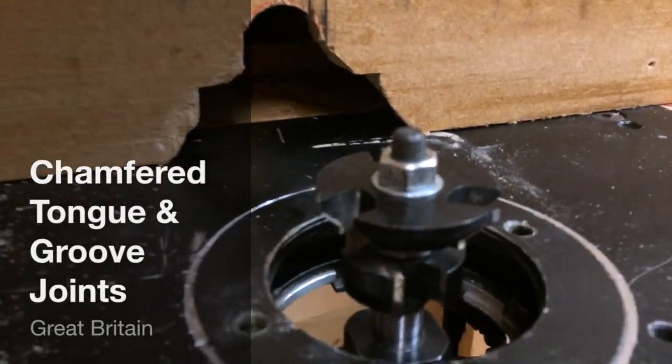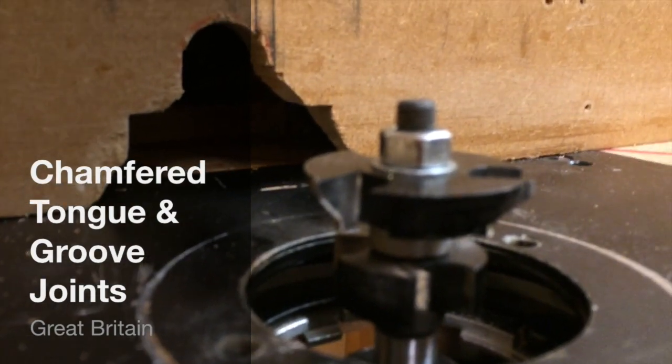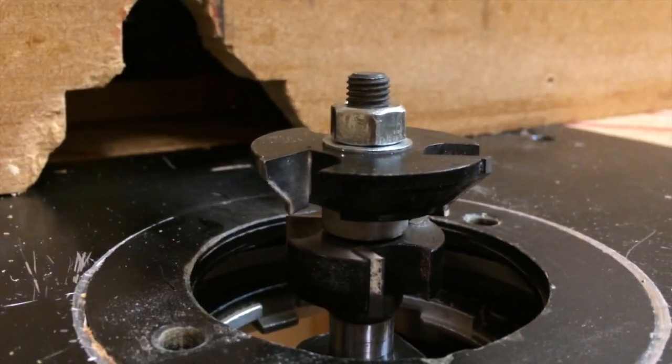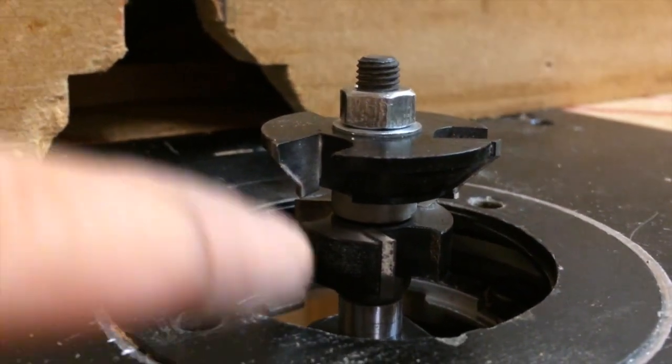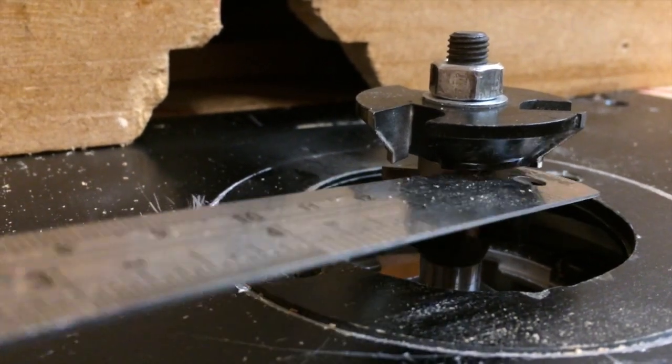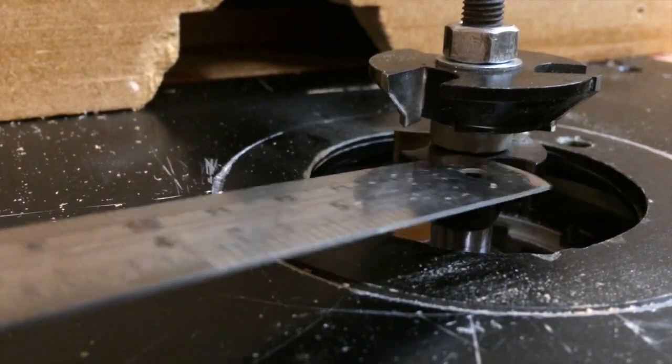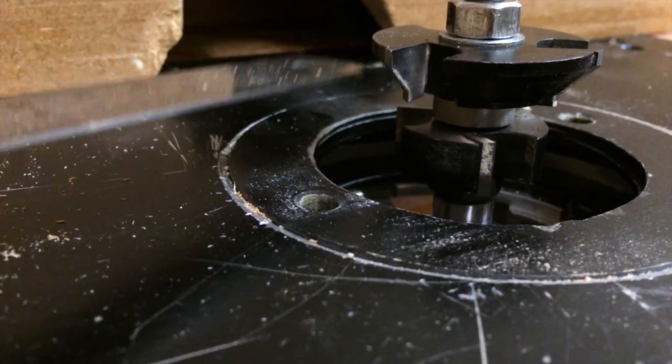All right, this particular router bit has a tongue and a groove component to it. If you look right here, you'll see that little wheel. That little wheel is what is going to be your tongue. That's what's going to make your tongue with this spacing right here in between these two cutters.